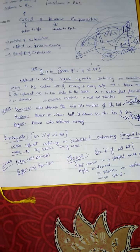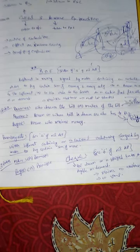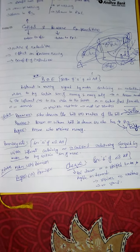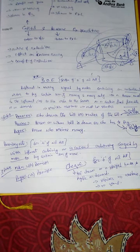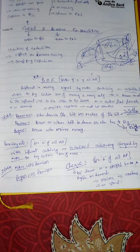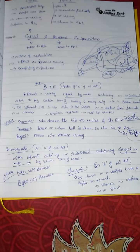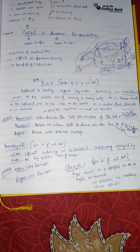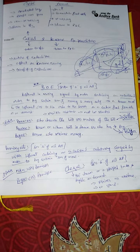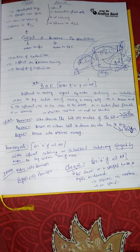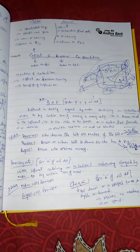Promissory note: an unconditional undertaking signed by the person who needs to make the payment — signed by the maker, that is, the buyer prepares this promissory note. Two parties: maker and payee, or promissor and promisee. Bill of exchange is defined under Section 5 of NI Act — it is an unconditional order to make the payment, signed by the maker. Both are signed by the maker, but one is an unconditional order and the other is an unconditional undertaking. Two parties to a promissory note; three parties to a bill of exchange: drawer (the one who draws the bill — the seller), drawee (the one who has to make the payment — the buyer), and payee (the person who receives the payment).